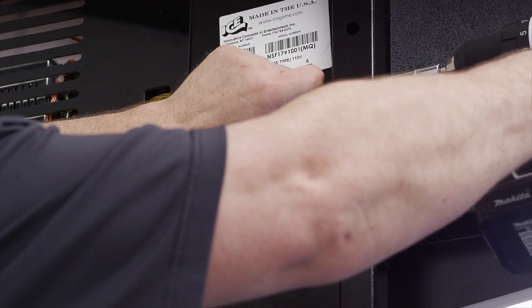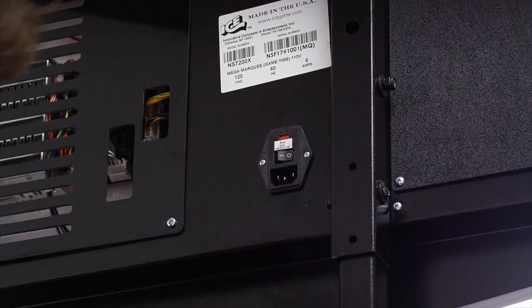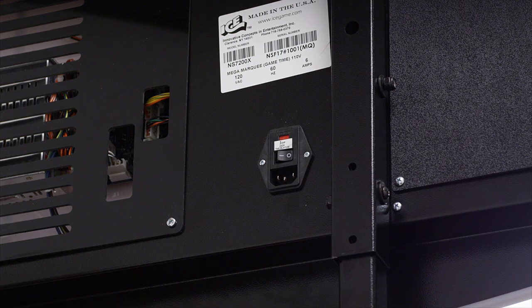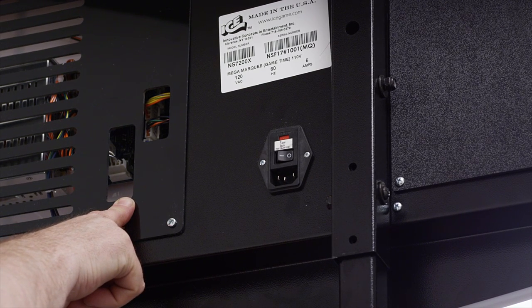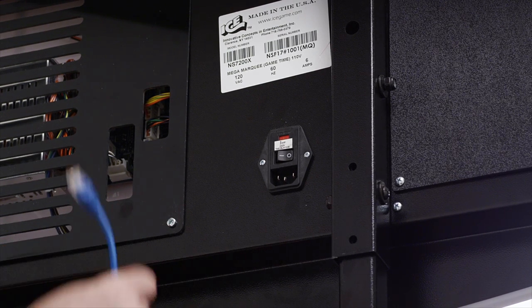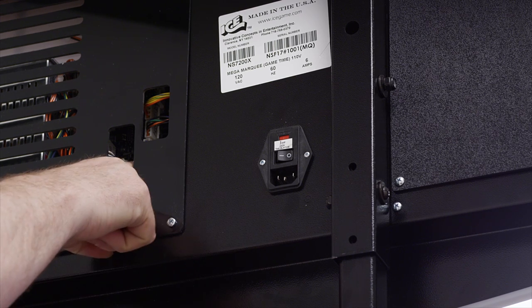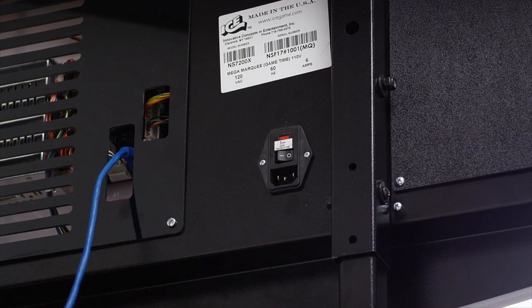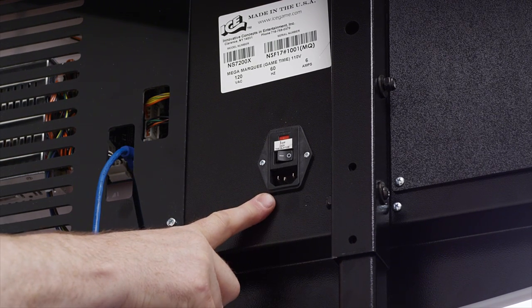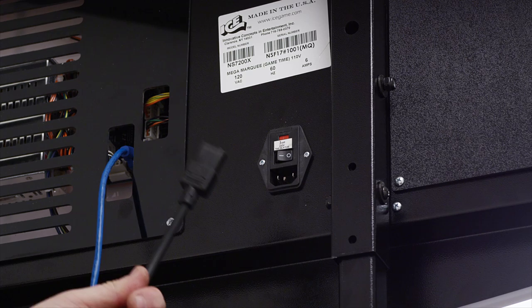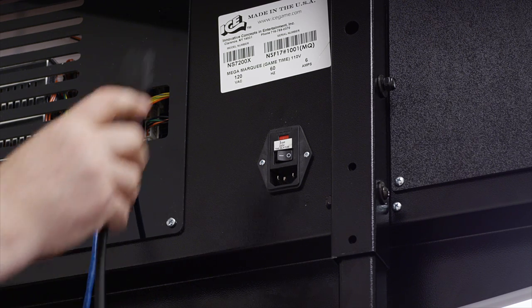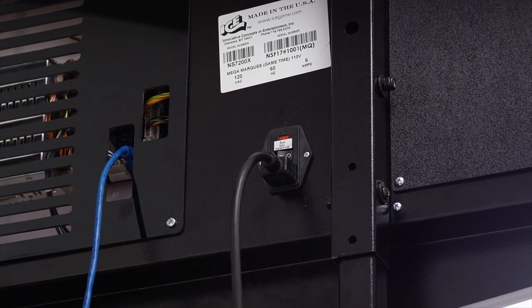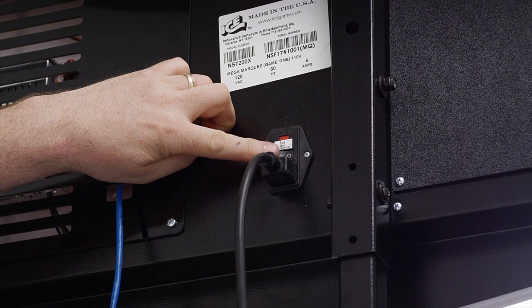There is an RJ45 connector that one end of the linking cable needs to be plugged into. Install one end of the linking cable to the RJ45 connector located on the marquee main board. Install the AC cord to the AC input of the marquee. Make sure the power switch is on 1 and not on 0.